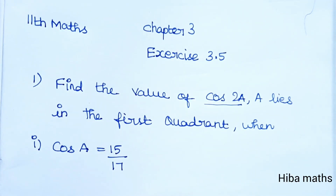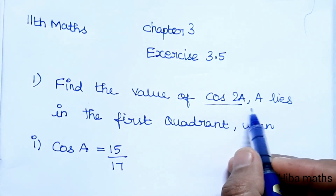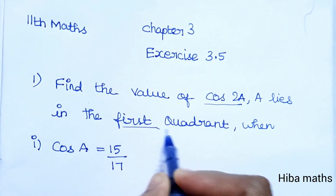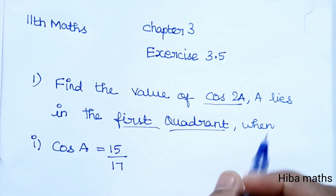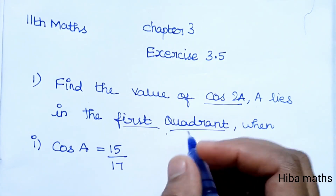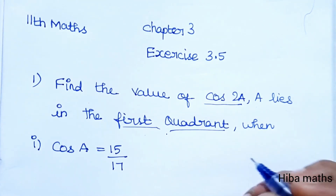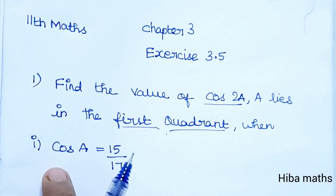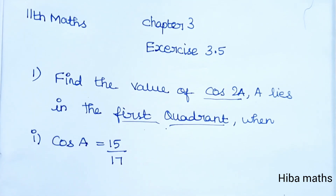Hello students, welcome to Heba Max. 11th standard Maths, Chapter 3, Exercise 3.5, first question: find the value of cos 2A. A lies in the first quadrant. First subdivision: cos A is equal to 15 by 17.